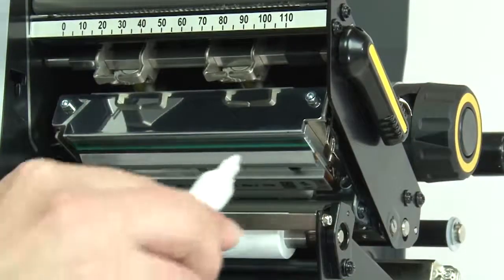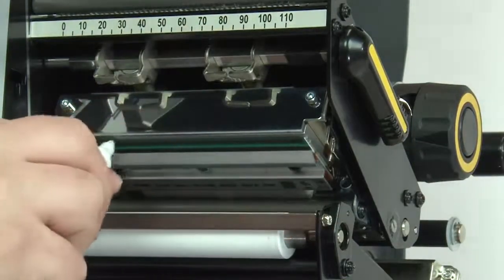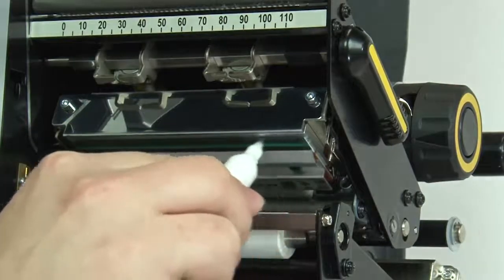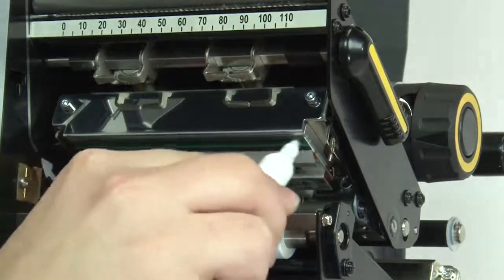Use a Zebra preventative maintenance cleaning swab or pen to wipe along the brown strip on the printhead, or use a lint-free cloth or swab dipped in 99.7% isopropyl alcohol.